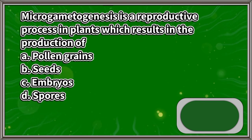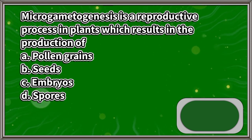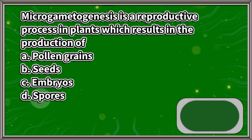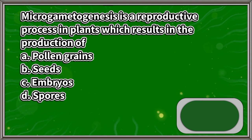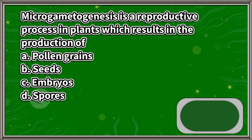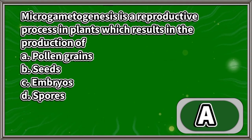Microgametogenesis is a reproductive process in plants which results in the production of: A. Pollen Grains, B. Seeds, C. Embryos, D. Spores. The answer is letter A.